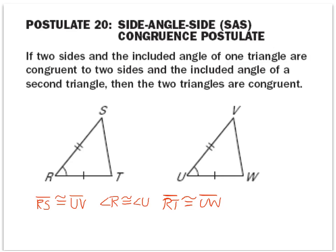So in this example, we have side RS congruent to side UV. Angle R is congruent to angle U — there's your angle. And side RT is congruent to side UW — there's our side. So by side-angle-side, we can say that these triangles are congruent. Triangle RST is congruent to triangle UVW.